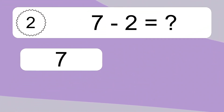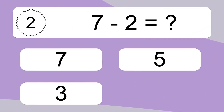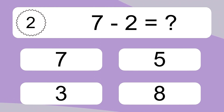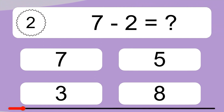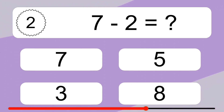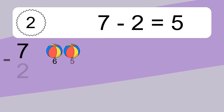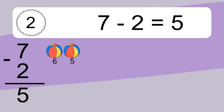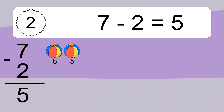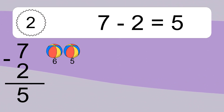7 minus 2 equals what? 7 minus 2 equals 5. Let's count it. 6, 5.